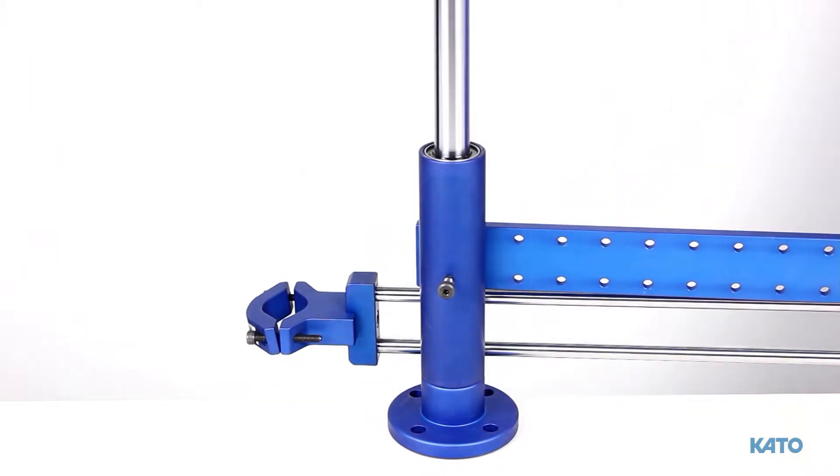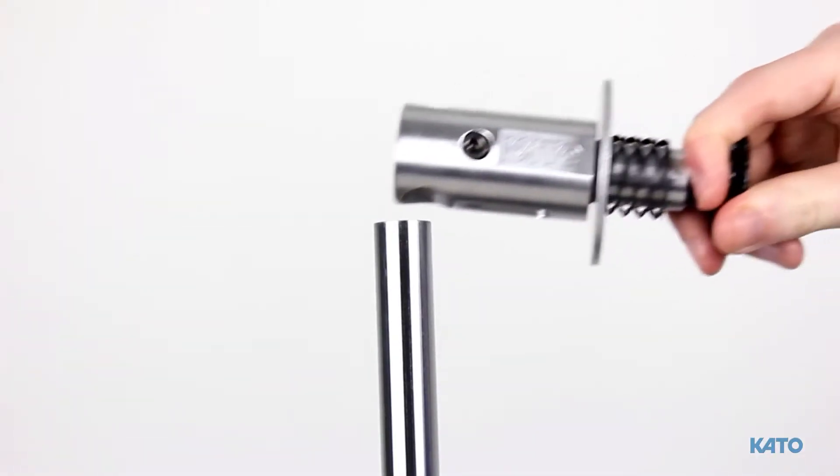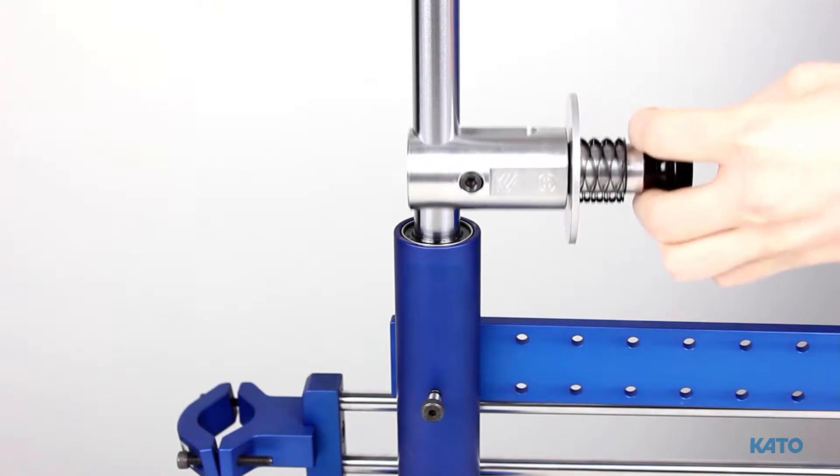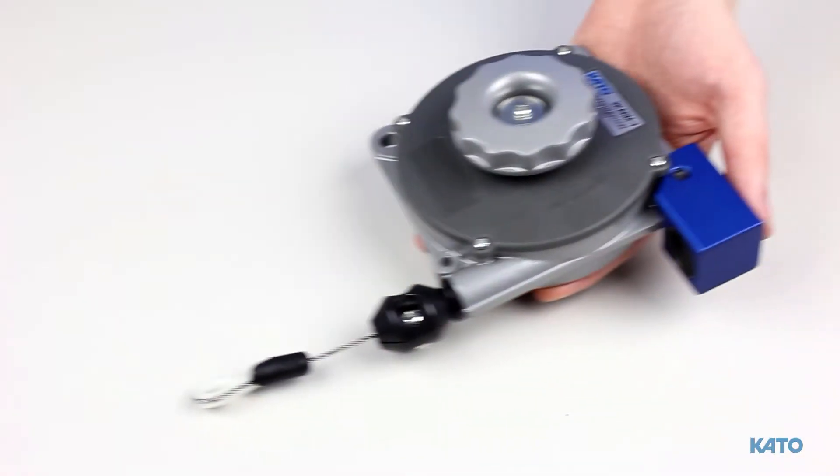After the articulating arm has been put on the vertical post, let's slide on the strip feed reel bracket. Once the strip feed reel bracket has been put on the vertical post, let's put on the balancer.